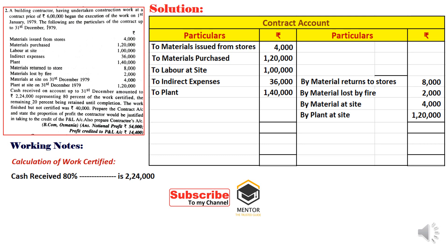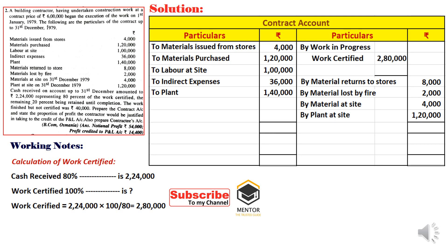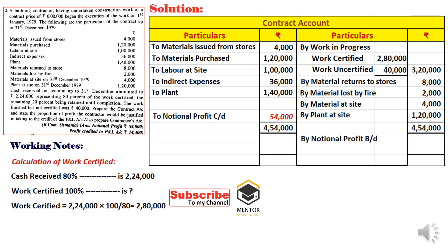Working note: work certified = 2,24,000 × 100/80 = 2,80,000. In work in progress: certified 2,80,000 plus uncertified 40,000 (given). Closing the account gives notional profit of 54,000 carried down, then brought down as 54,000.